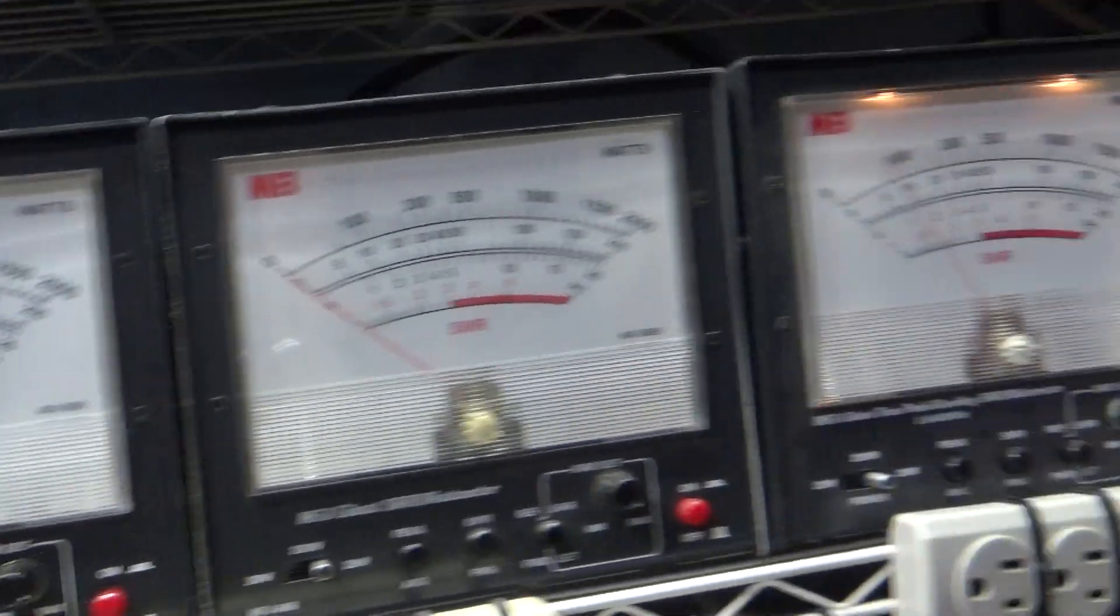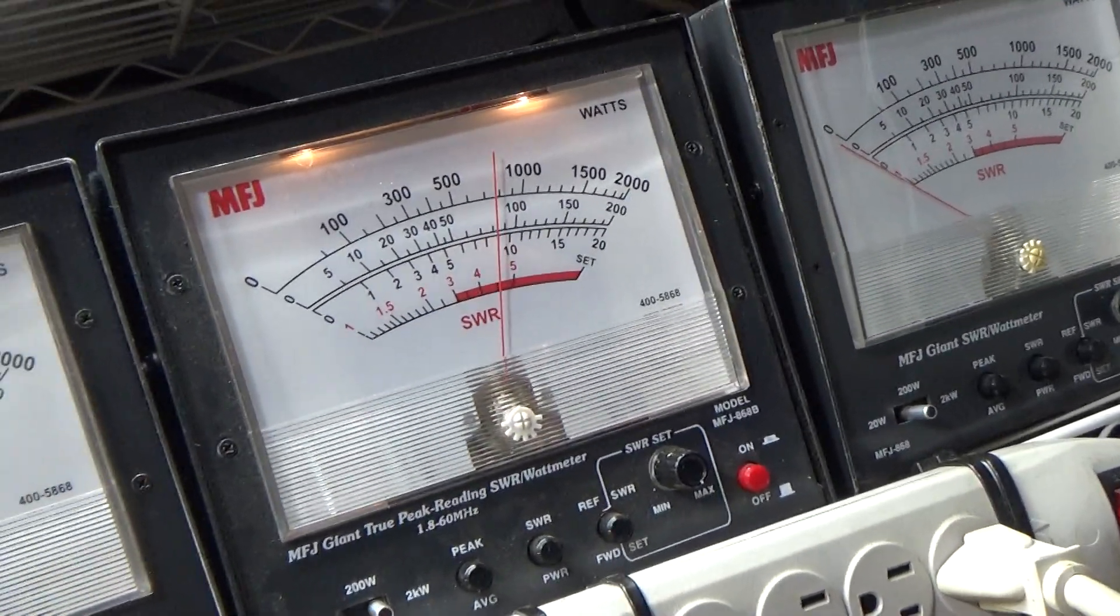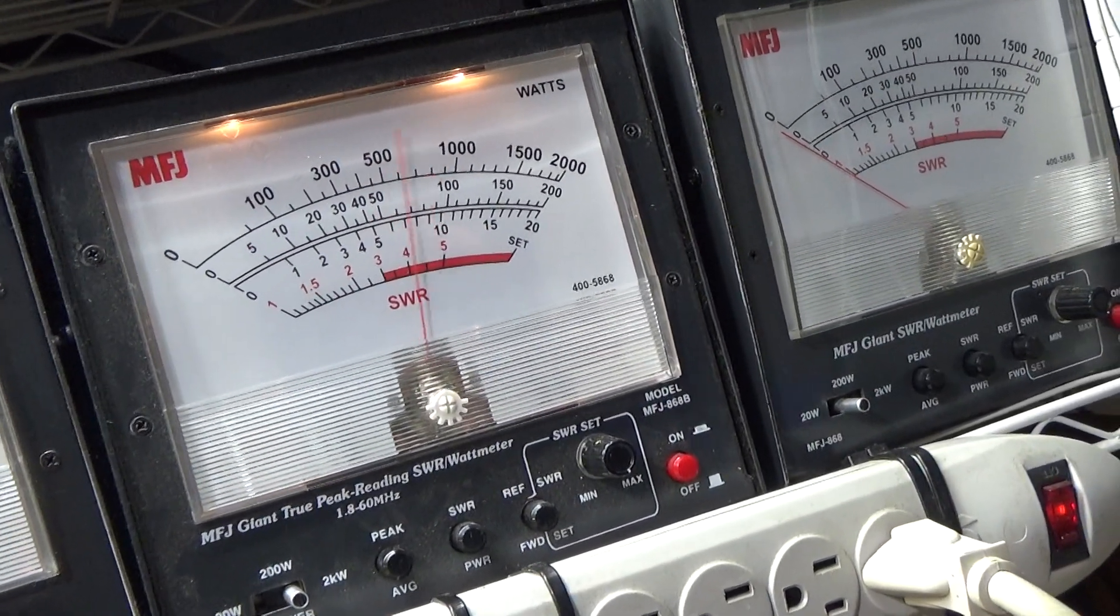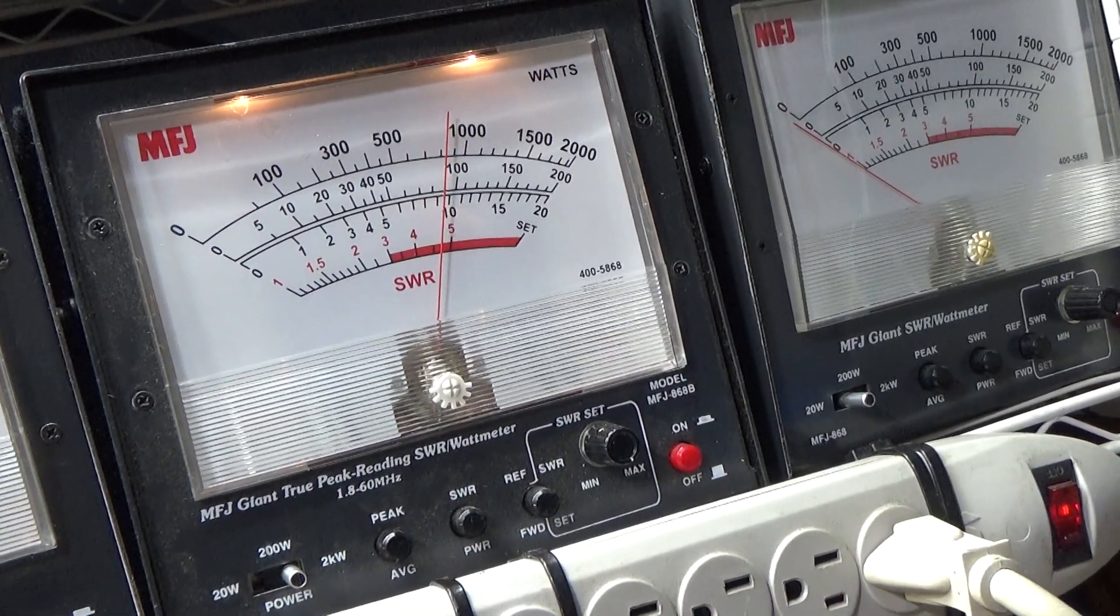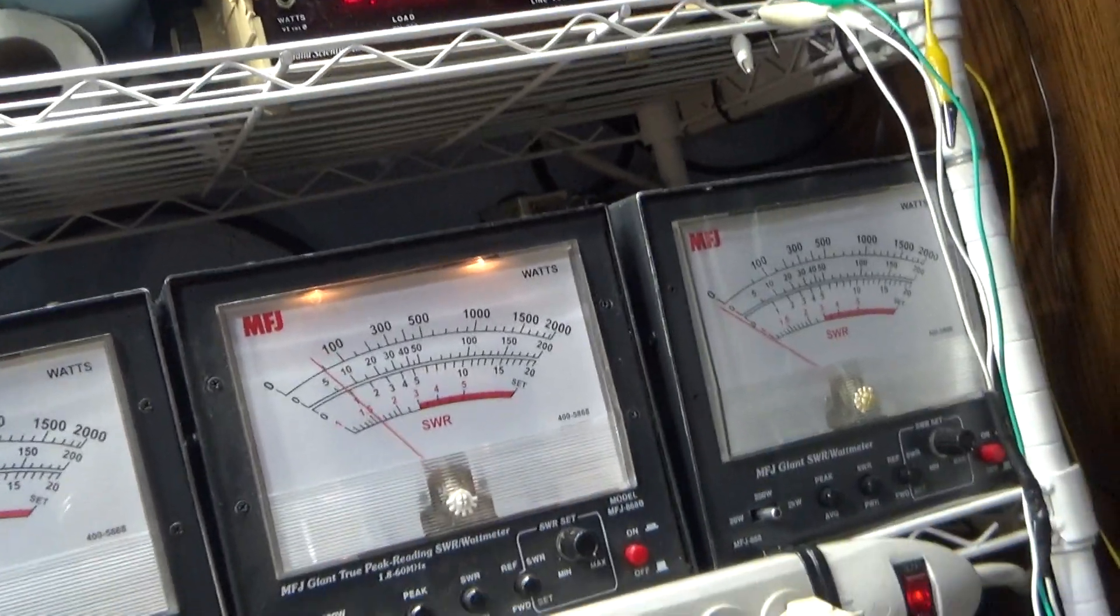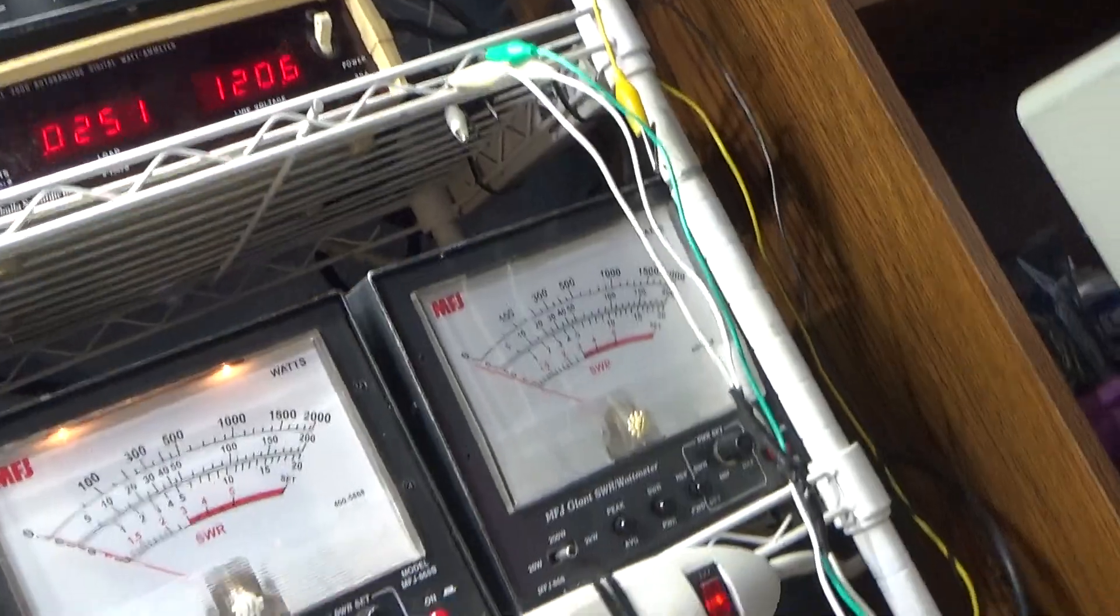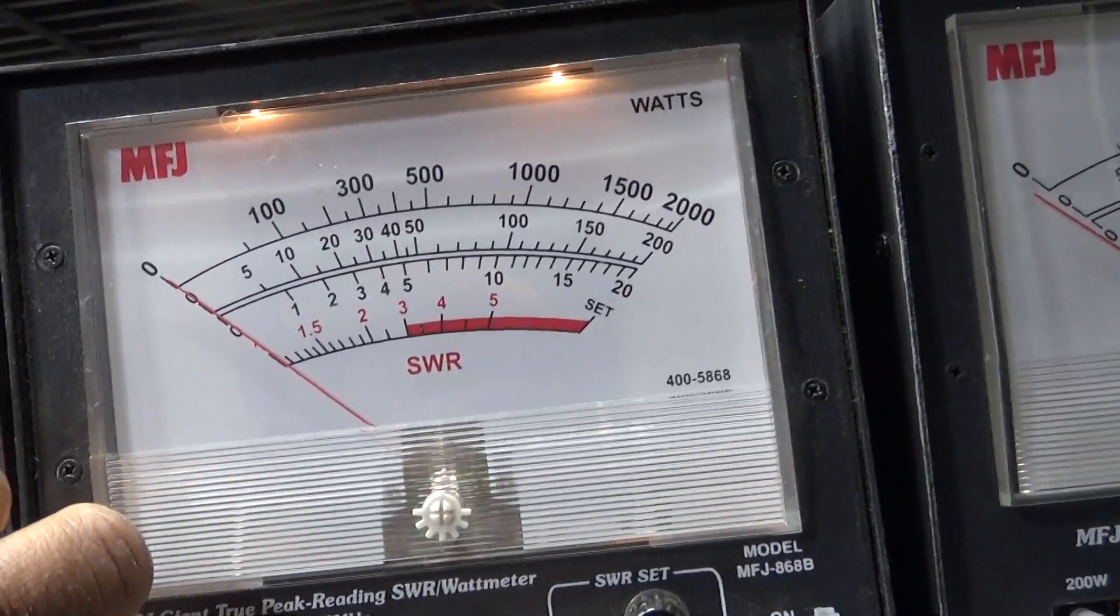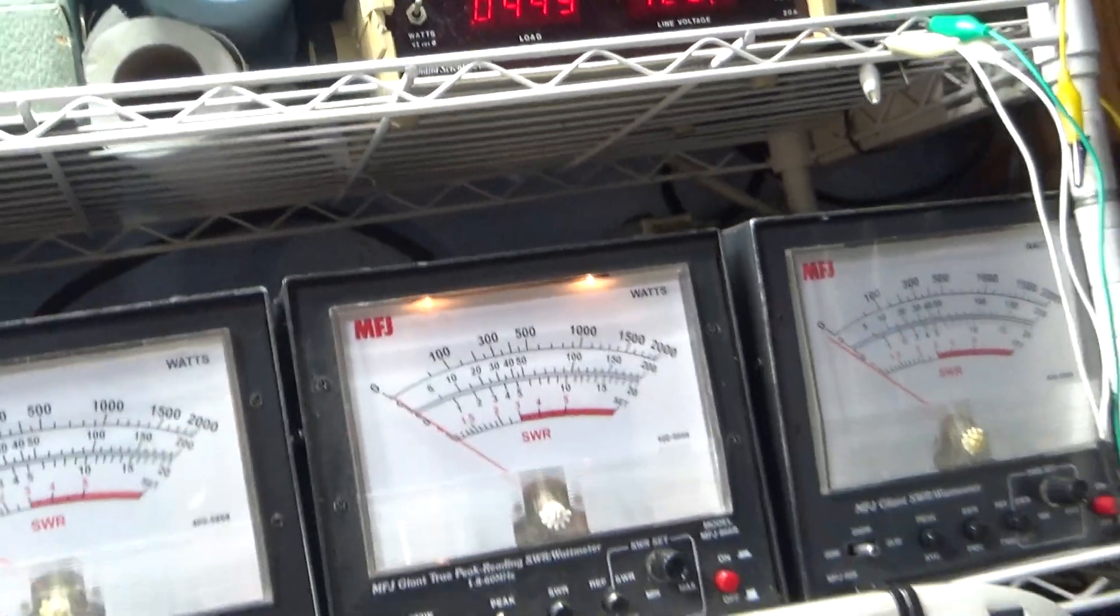And we're whistling to about 900 watts RMS. That's the 2000 watt scale on that watt meter, the output of it. And last, we're going to put it on peak.